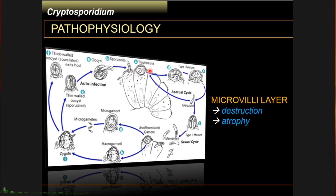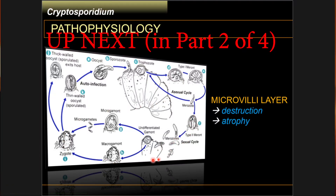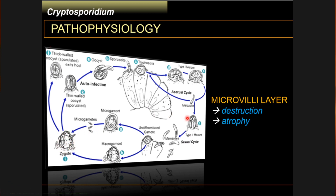Inside the gut, Cryptosporidium develops within the parasitophorous vacuoles (PVs), which are within the microvilli layer or brush border of your intestinal epithelial cells. There is an asexual cycle where they multiply through binary fission, and a sexual cycle composed of gamonts and gametes, eventually forming a zygote. These endogenous intestinal stages cause microvilli layer destruction and atrophy, leading to impaired glucose and electrolyte transport, impaired carbohydrate and protein digestion, manifesting as primarily malabsorptive and maldigestive disease.